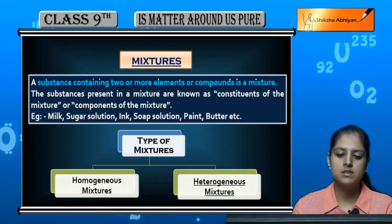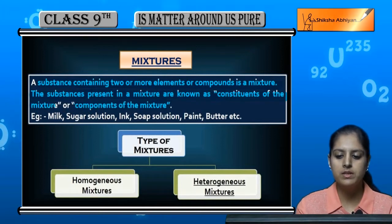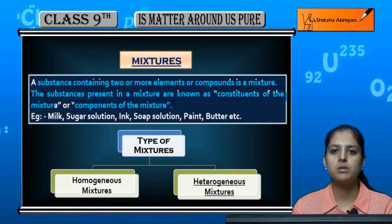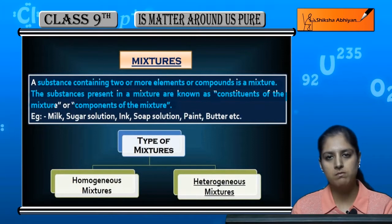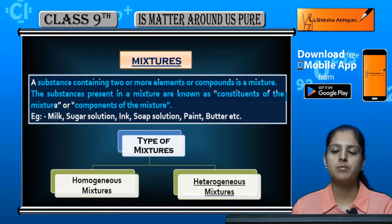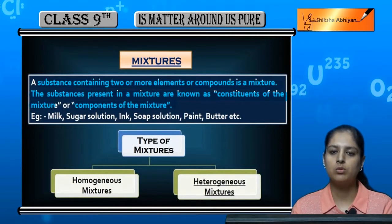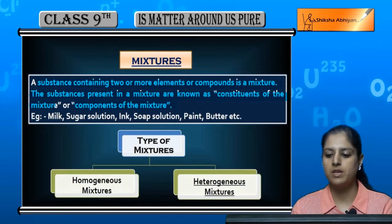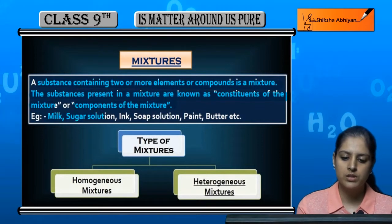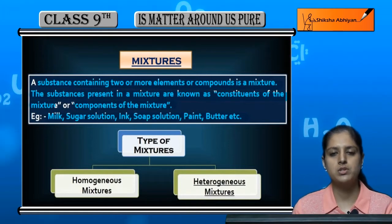The substances present in a mixture are known as constituents of the mixture, or components of the mixture. The things from which a mixture is formed are called constituents. For example, air is also a mixture — it is a mixture of gases. The gases from which air is made are called its constituents or components. Examples include milk, sugar solution, ink, soap solution, paint, butter, etc. — these are all examples of mixtures.